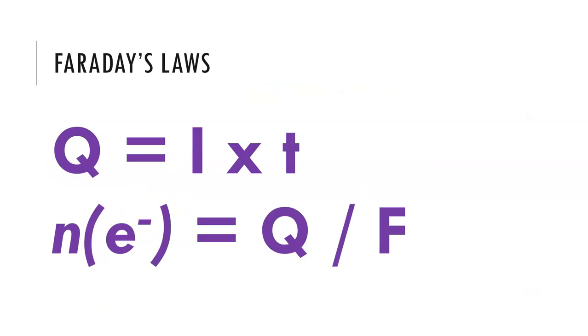So these are our two equations for Faraday's laws in order for us to be able to apply them in different questions. So q is equal to it where q is charge in coulombs, i is the current measured in amps i.e what we can get from the ammeter in the lab, time measured in seconds.